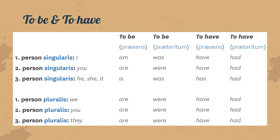What about the other two verbs? They change their form differently and don't follow the three rules we talked about earlier. The verb 'to be' becomes am, are, is, are, are, are for the present tense, and was, were, was, and were for the plural persons in the past tense.